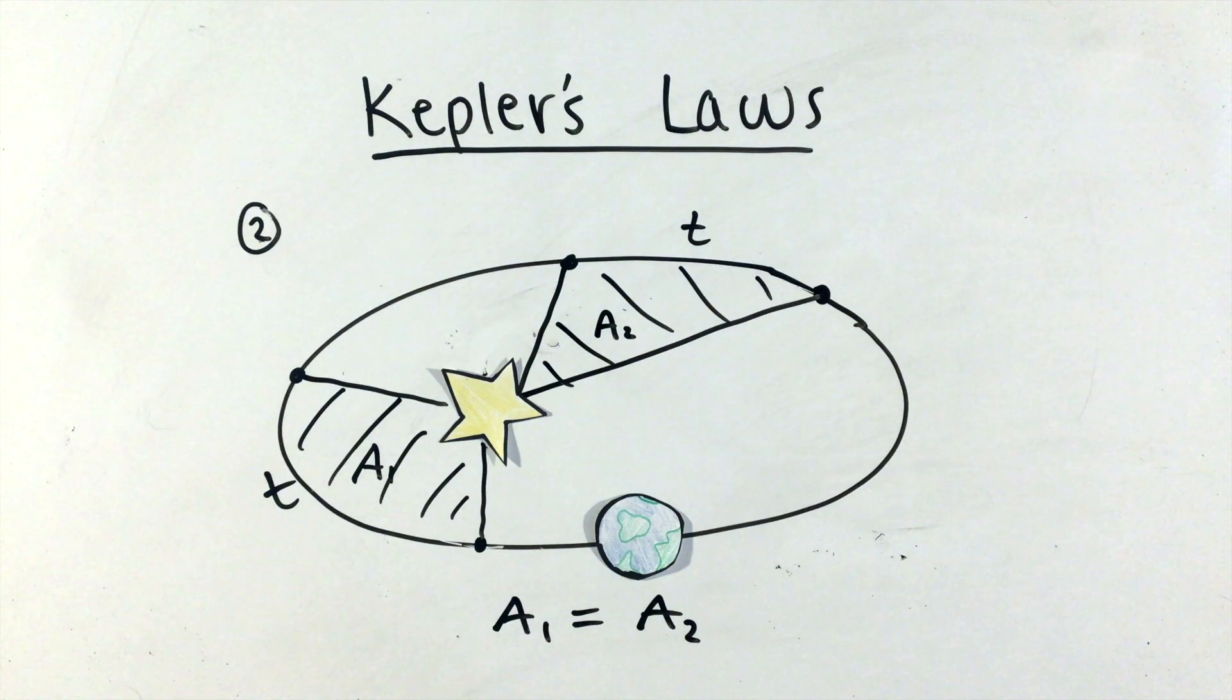Because the gravitational force is a central force, or a force that always points in the radial direction, it will provide no torque on planets or other orbiting objects, conserving the total angular momentum of the orbit as a whole.